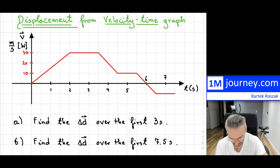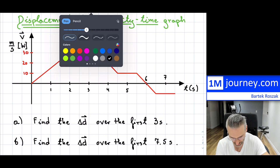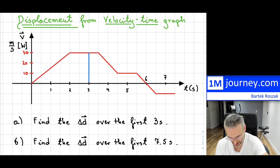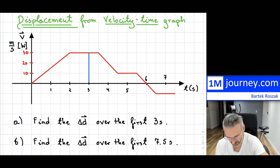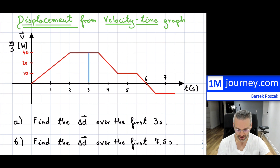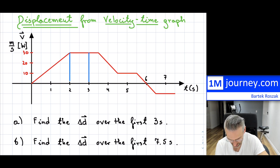If you want to find displacement over three seconds, that means we're going all the way up to here and we have to find this entire area under the actual curve. The area is between the curve and the zero line. An easy way to do this is: for the first two seconds, it looks like it's just a triangle.